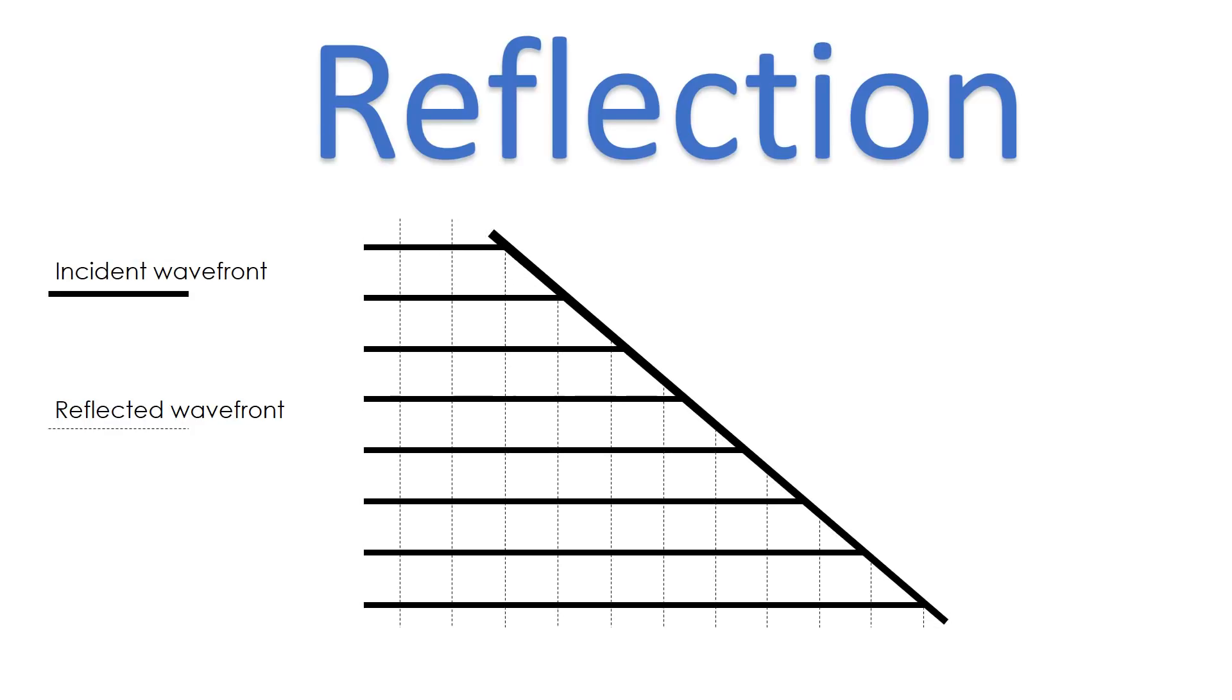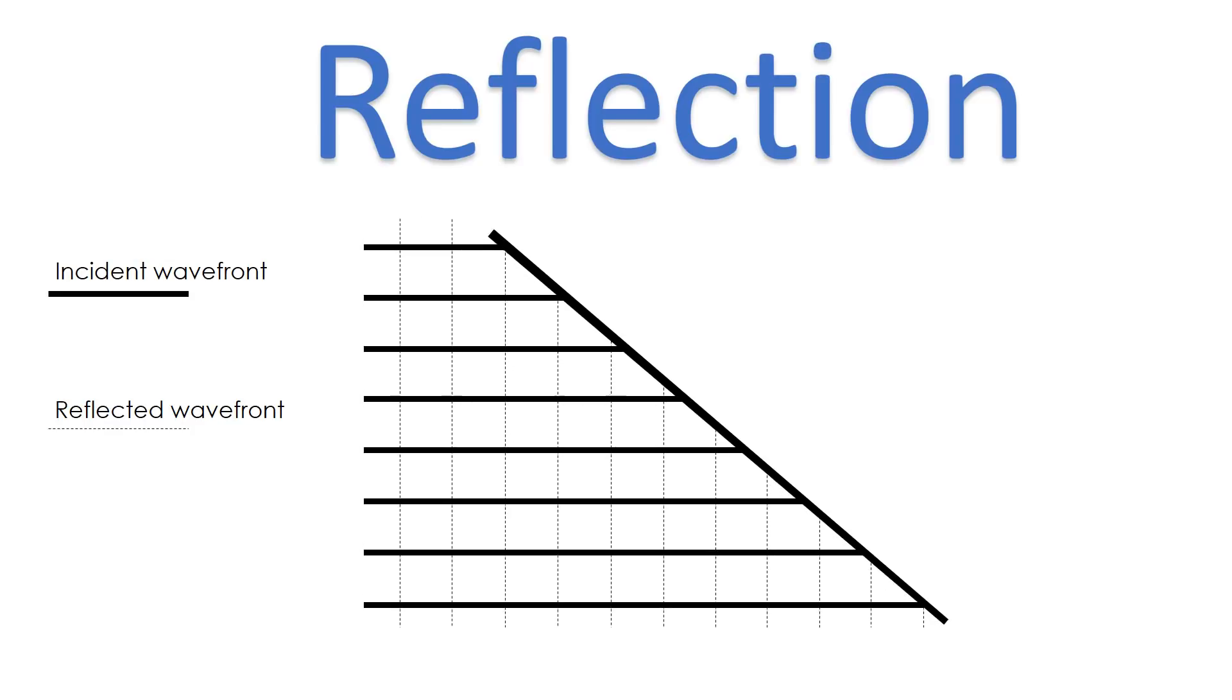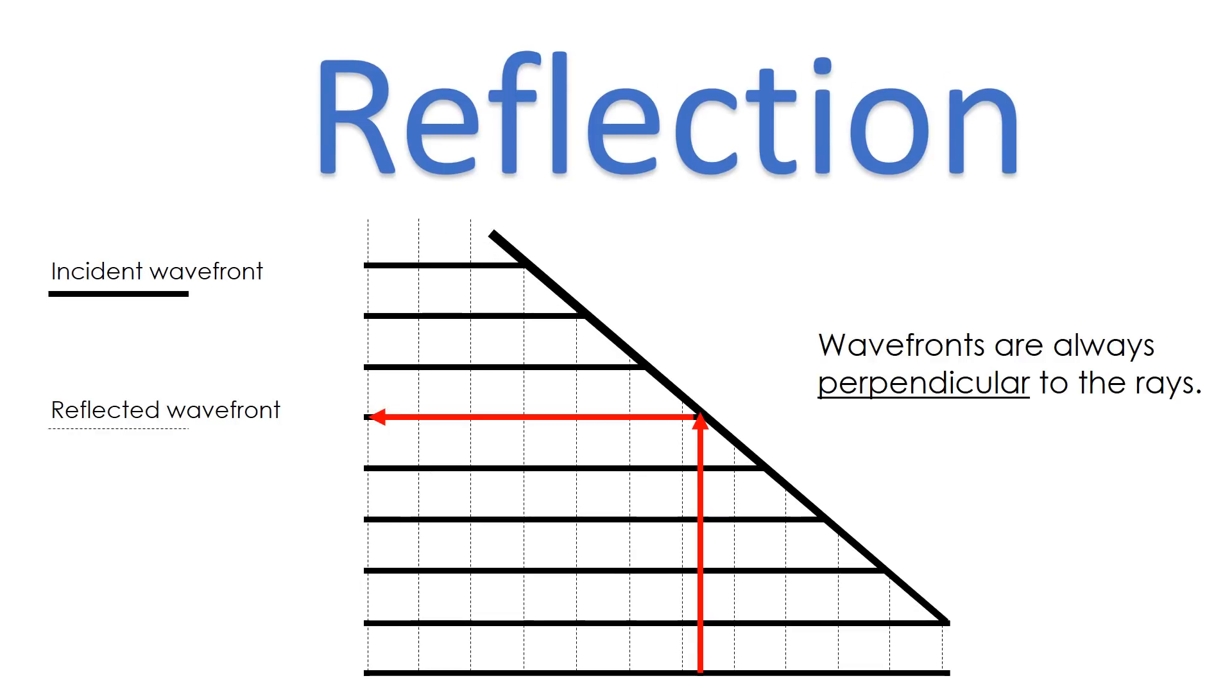So that's what we would get if we were essentially reflecting wavefronts off a plane barrier. So in terms of thinking about how the two models relate, if we put the rays onto this system, the wavefronts, as Huygens imagines them, are always going to be perpendicular to the rays that Newton imagined. That's a useful way of relating the two models.